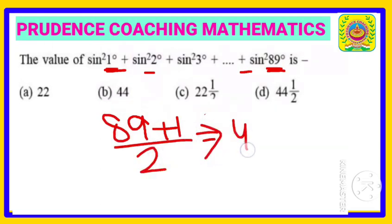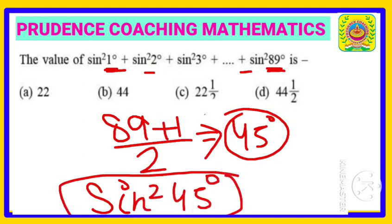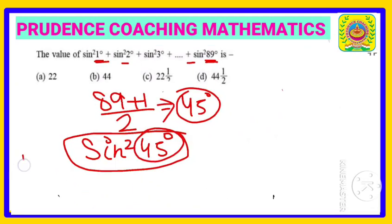So at the middle of this particular series we have sine square 45 degrees that has no pair with any one, so this one we're going to calculate afterwards. But the rest we have pairs, so 45 is the middle one. That means this side we have 44, this side we have 44.